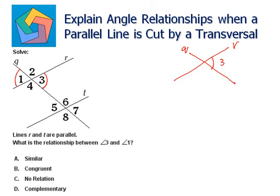Both are lying on the opposite side of the intersection. When angles are lying on the opposite sides of the intersection, they are known as vertically opposite angles.